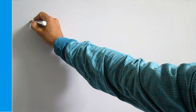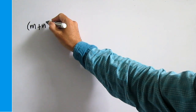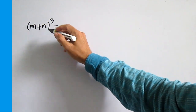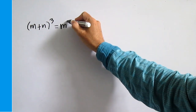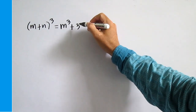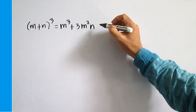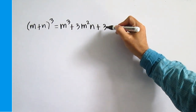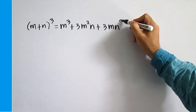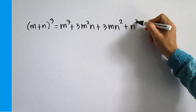Find the product. The cube of a binomial consists of the cube of the first term, thrice the product of the square of the first term and the second term, thrice the product of the first term and the square of the second term, and the cube of the second term.